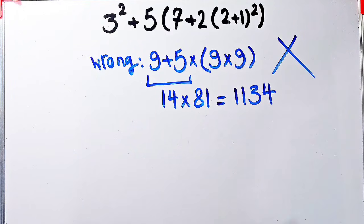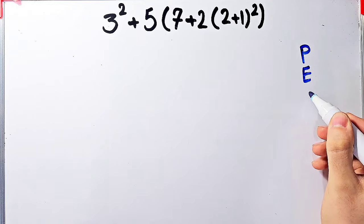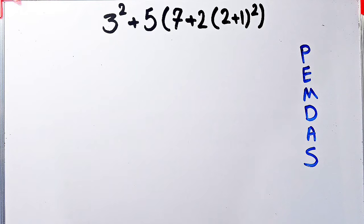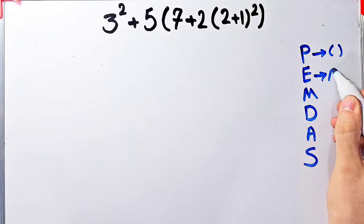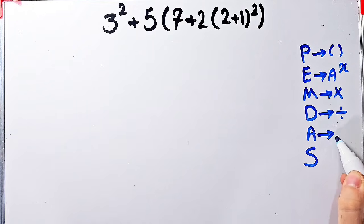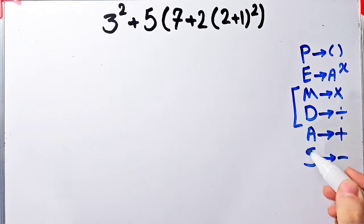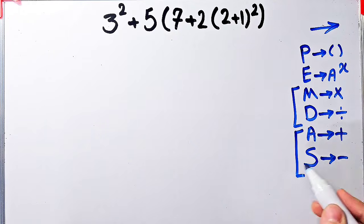This answer is definitely wrong. Let's solve this question step by step together. To solve this question we need to follow the order of operations, which is PEMDAS. PEMDAS shows the priority of mathematical operations, and if you don't pay attention to this rule you get the wrong answer. P stands for parentheses, E stands for exponent, M stands for multiplication, D stands for division, A stands for addition, and S stands for subtraction. Multiplication and division have the same level of priority; also addition and subtraction have the same level of priority. When we have both in an expression, we start from the left.